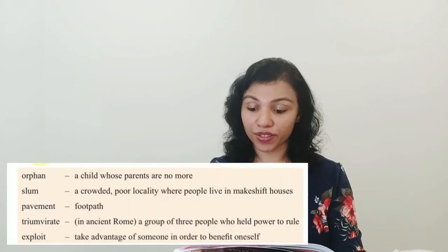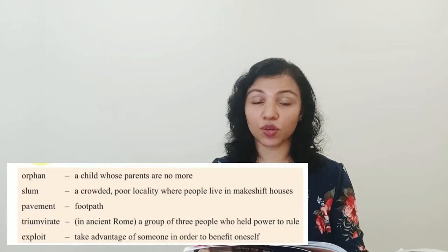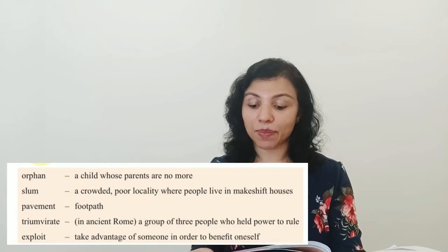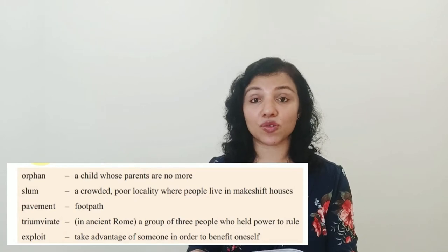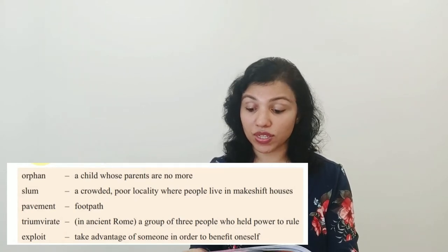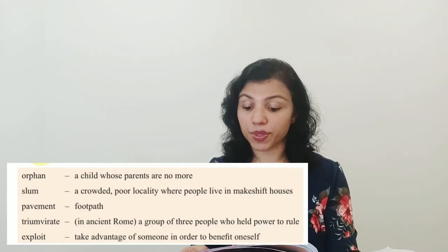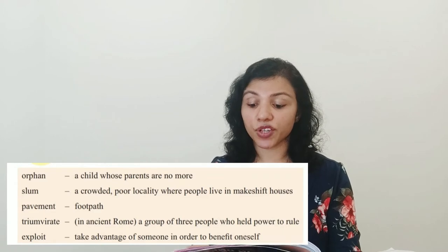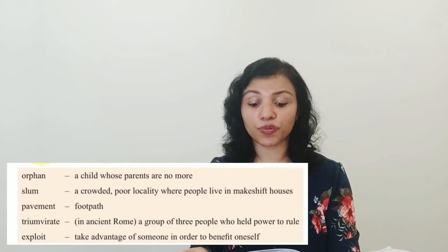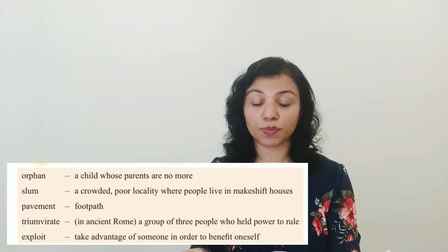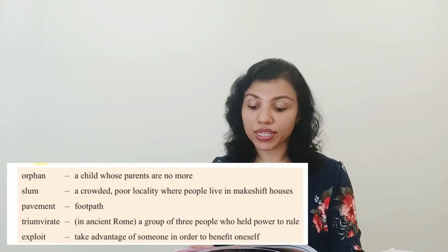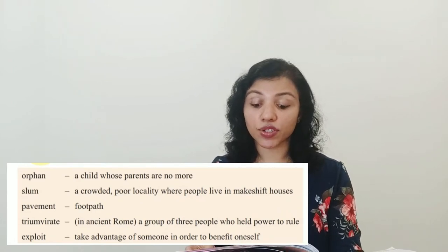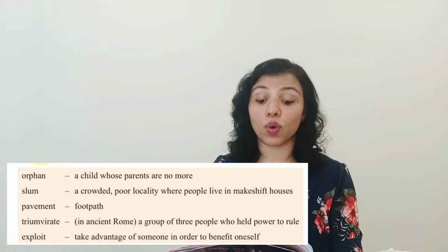Let's look at the word meanings. Orphan: a child with no parents. Slum: a crowded poor locality where people live in makeshift — meaning temporary — houses. Pavement: a footpath. Triumvirate: in ancient Rome, a group of three people who held power to rule; it basically just means three people. Exploit: to take advantage of someone in order to benefit oneself.